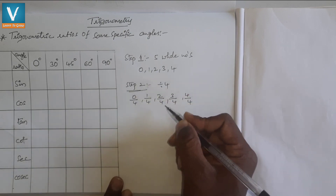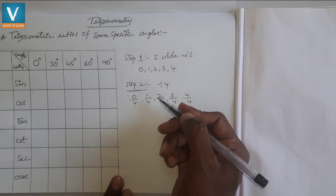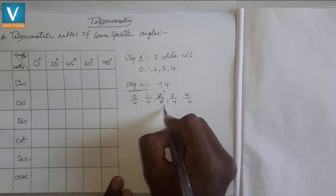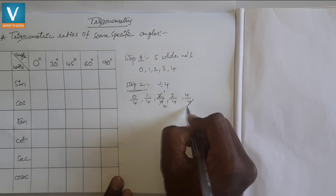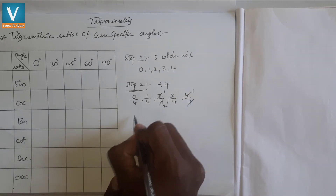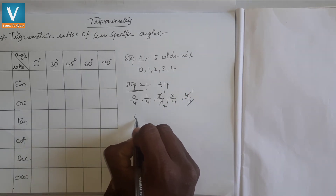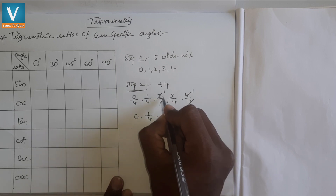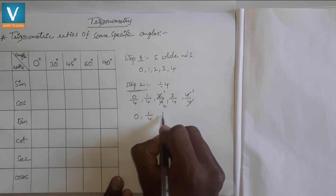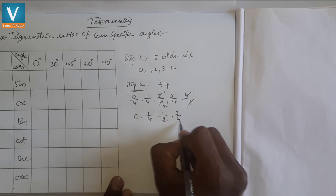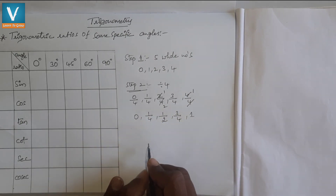If any cancellation is possible, you can do it. Here 2/4 simplifies and 4/4 simplifies. After simplification we get: 0/4 = 0, 1/4 stays as 1/4, 2/4 = 1/2, 3/4 stays as 3/4, and 4/4 = 1.